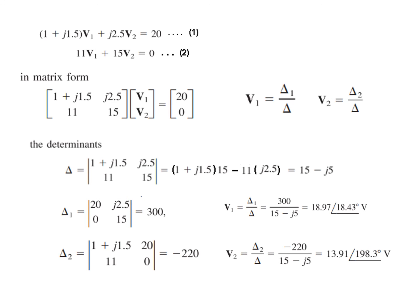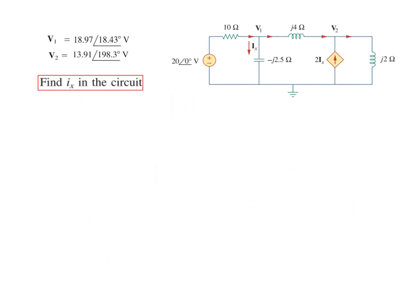We found v1 and v2, but we are interested in finding ix—that's the question. First, we find ix in the phasor domain. From here, ix is v1 over minus j2.5. We know v1. This can be written as 2.5 angle minus 90. Solving, we get ix. Now this is in the phasor domain.